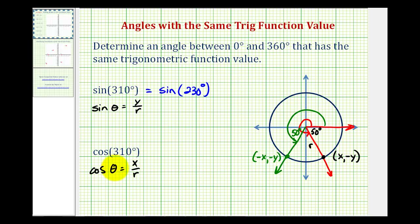Now for the second question, we want an angle that has the same cosine function value of 310 degrees. Going back to our original point of x, negative y, we want another point where the x coordinate would be the same. Notice how the x coordinate is positive, so the only other quadrant we could use would be quadrant one. We want a point in quadrant one that has the same x coordinate as this point, where both the x and y coordinates would be positive. So the terminal side of the angle would have to pass through this point.